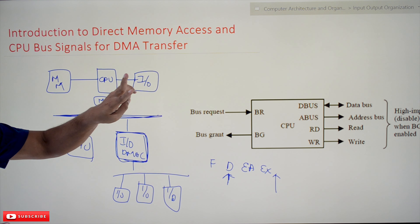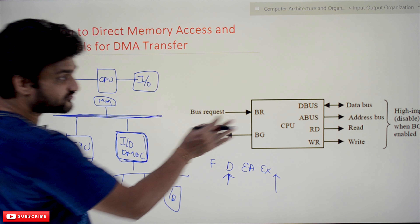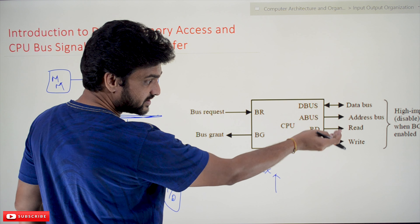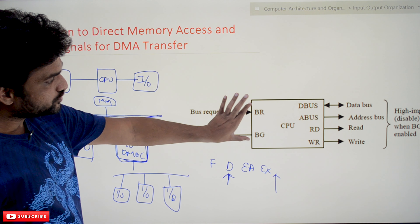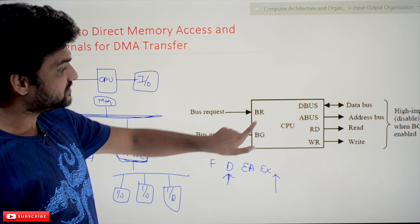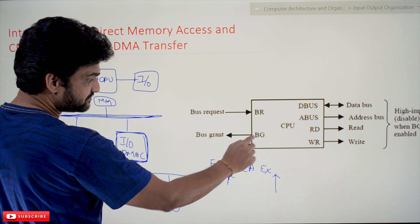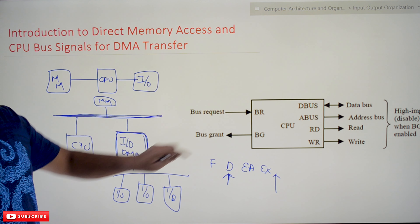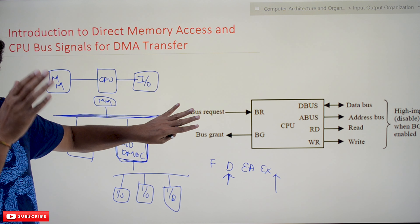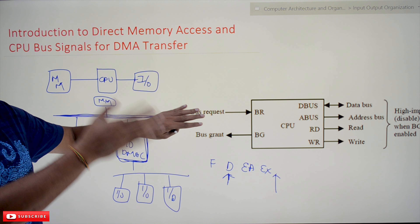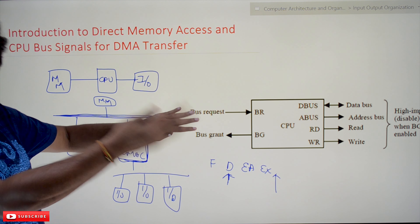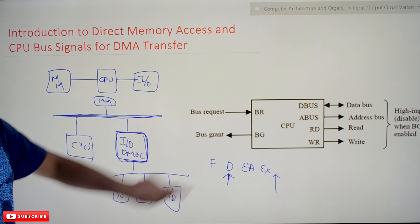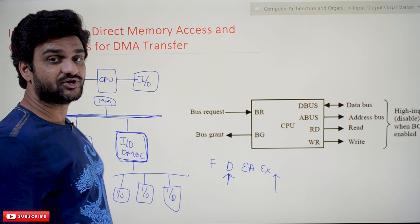Now we will understand how access to the bus is provided. That is done by CPU bus signals for DMA transfer. Apart from the bus lines like data line, address line, and read/write line, the CPU is provided with two pins: bus request and bus grant. Based upon these two lines, the CPU provides access to the bus to the I/O controller or direct memory access controller.